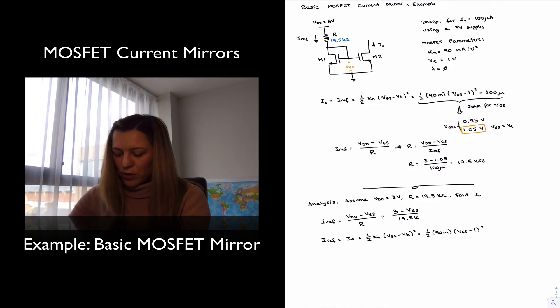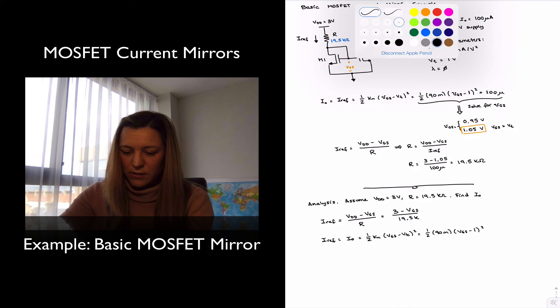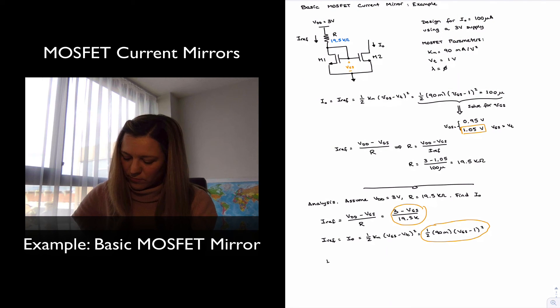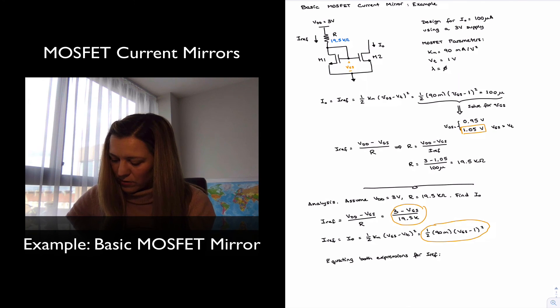Now I have two expressions for IREF. In essence, this one and that one. I can equate both expressions and figure out the value for VGS. And so if I am equating both expressions for IREF, I will have that 3 minus VGS divided by 19.5 K, it's equal to one half of 90 milli VGS minus 1 squared.